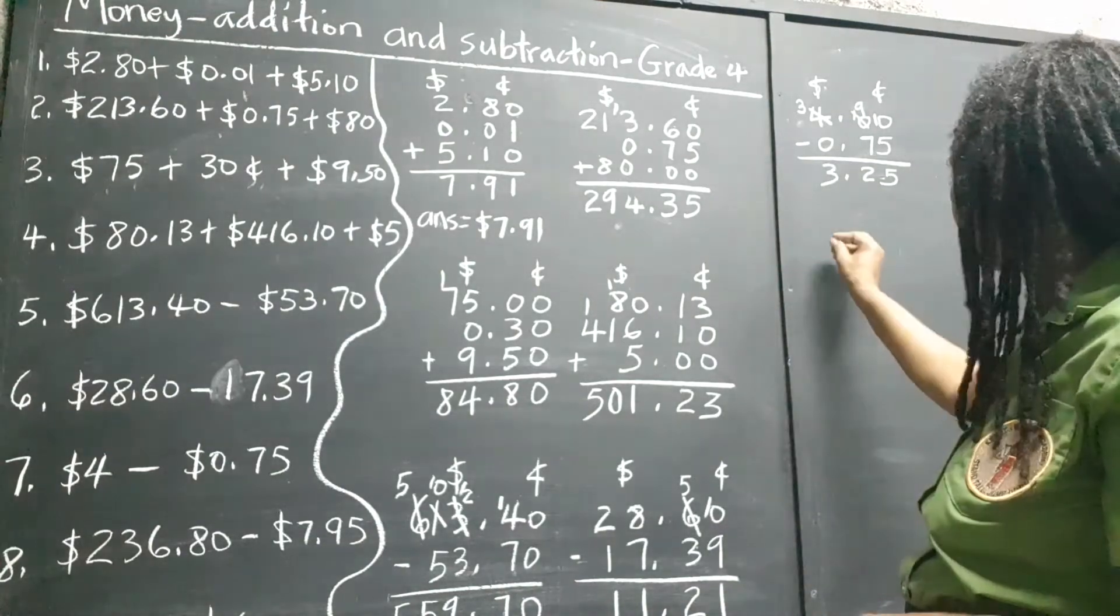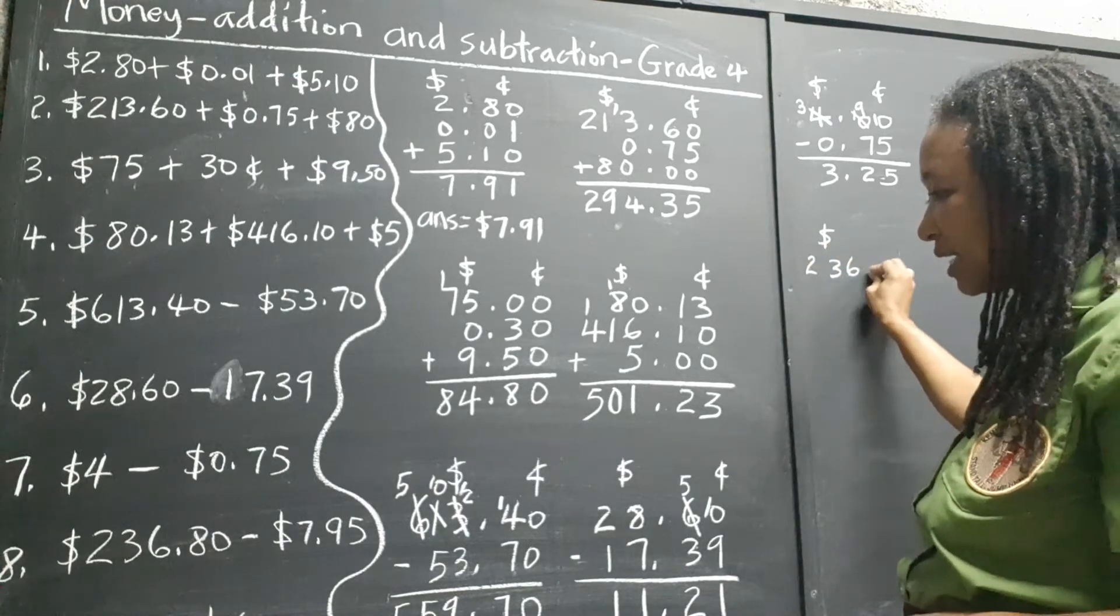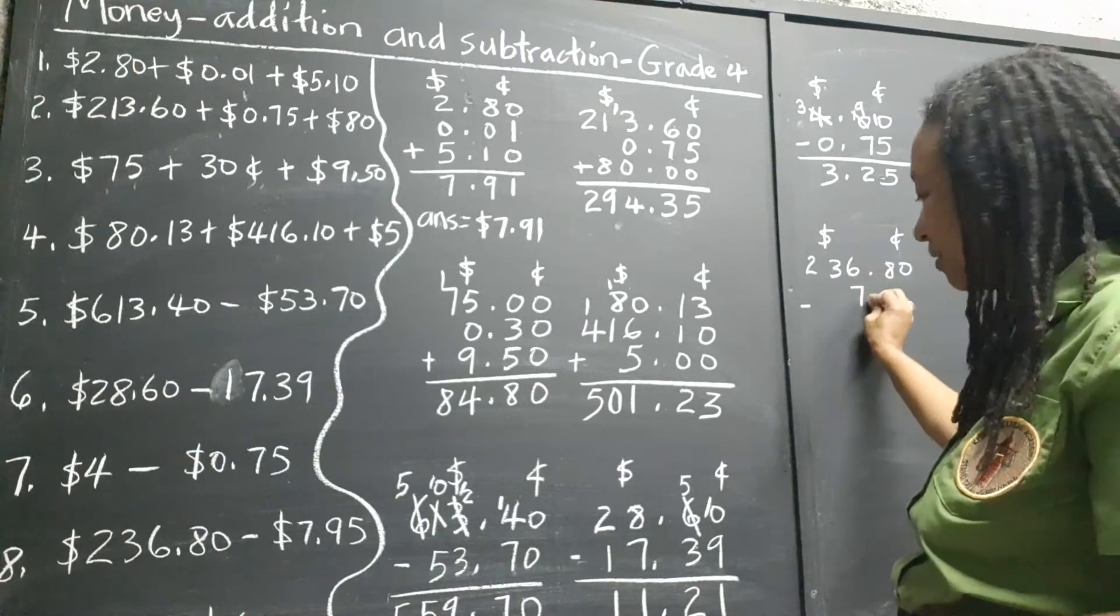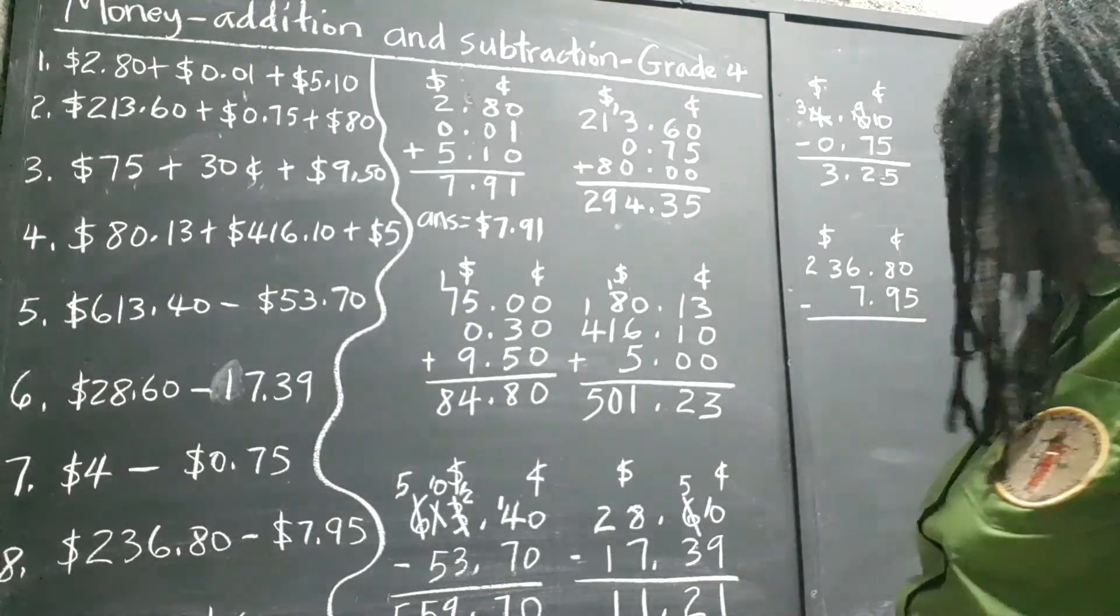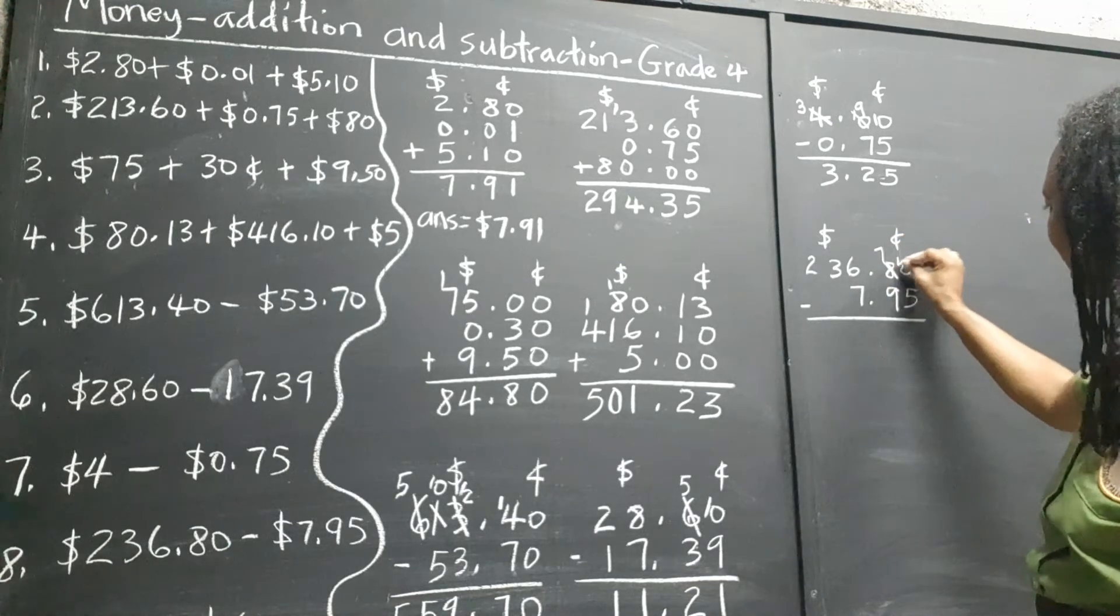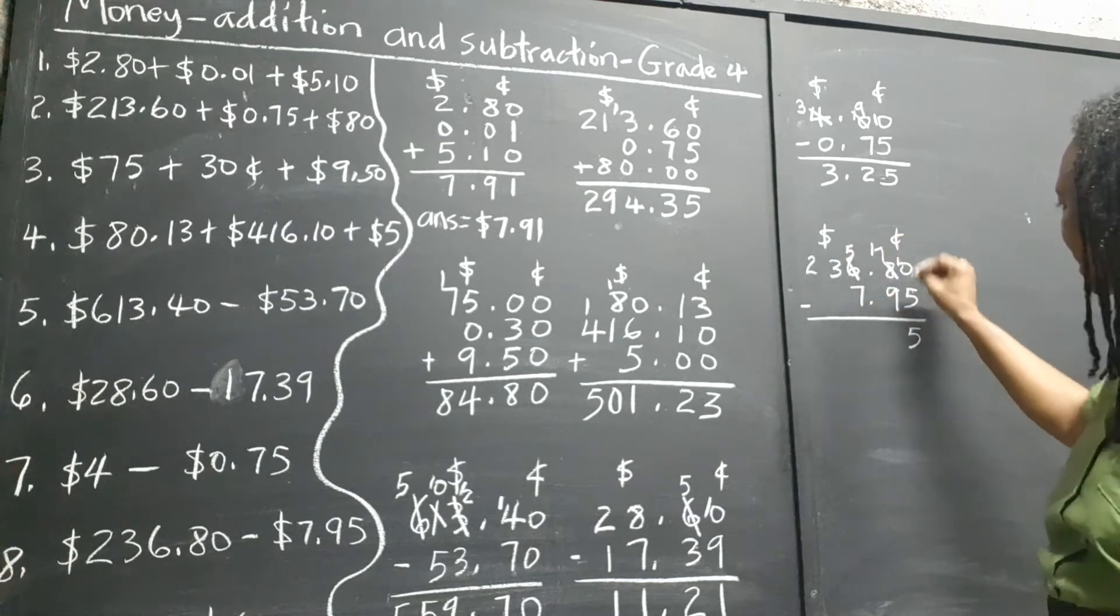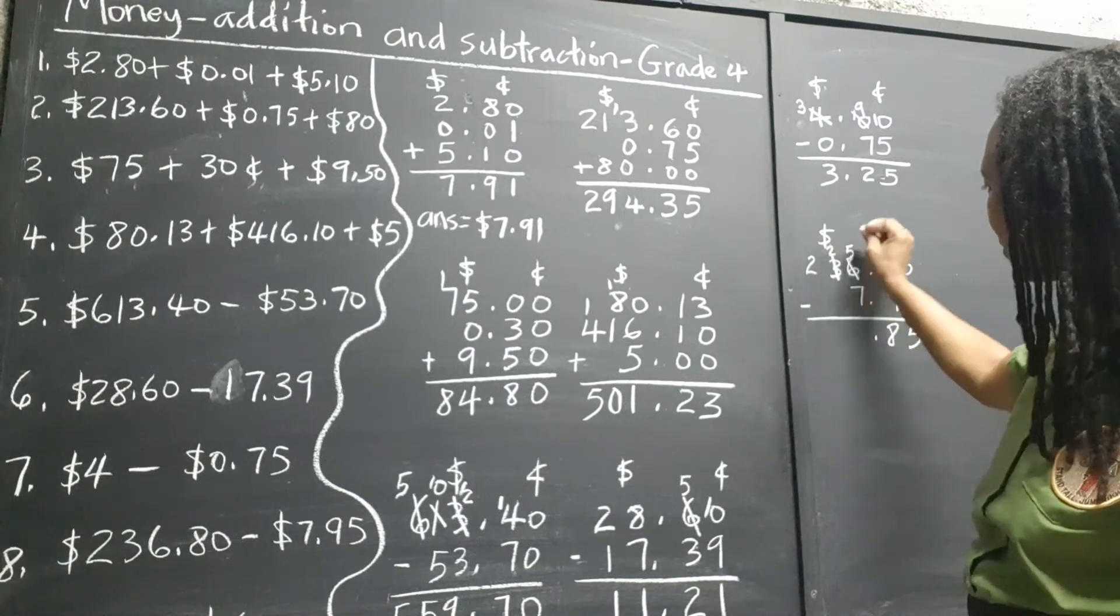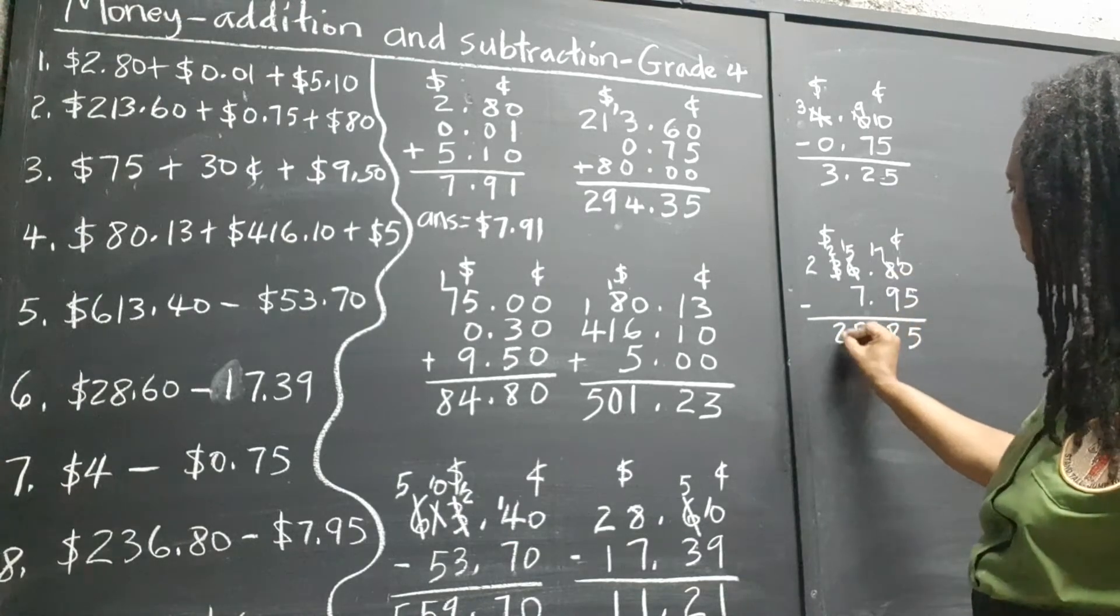Next. $236.80 subtract $7.95. Alright. So again we can't take 5 from 0. We're going to take 1 out of the 8. 10 take away 5 is 5. Take 1 out of the 6. 17 take away 9 is 8. Can't take 7 from 5. So we take 1 out of the 3. 15 take away 7 is 8. 2, 2.